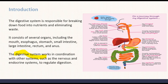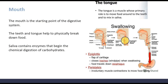The first part of the digestive system is the mouth. The mouth is the starting point of the digestive system, which ends with the anus. The accessory glands in the mouth are the salivary glands and teeth. Teeth help in the breakdown of food particles, and saliva helps to mix the food particles. Saliva contains enzymes that begin the chemical digestion of carbohydrates. The epiglottis is a flap of cartilage that closes the trachea windpipe when swallowing food.